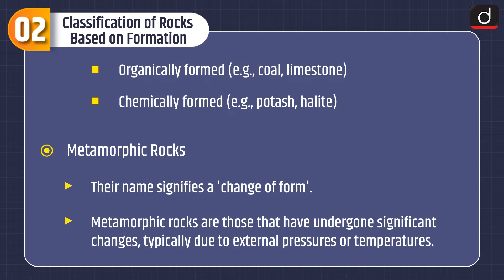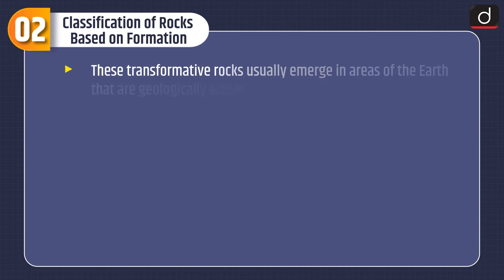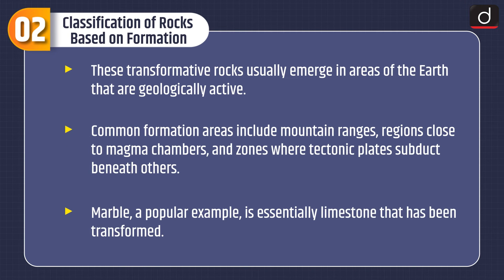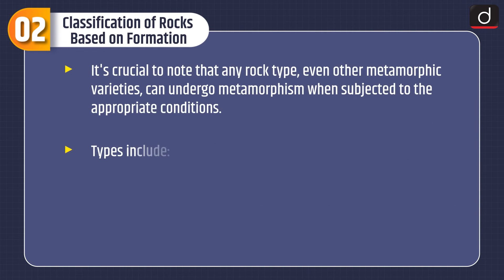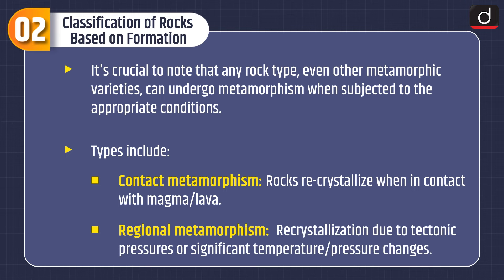Metamorphic rocks — their name signifies a change of form. These rocks have undergone significant changes, typically due to external pressures and temperatures. They usually emerge in areas of the Earth that are geologically active. Common formation areas include mountain ranges, regions close to magma chambers, and zones where tectonic plates subduct beneath others. Marble, a popular example, is essentially limestone that has been transformed. It is crucial to note that any rock type, even other metamorphic varieties, can undergo metamorphism when subjected to appropriate conditions.